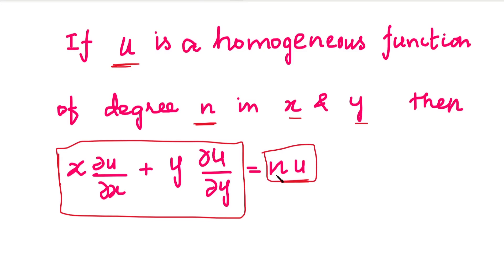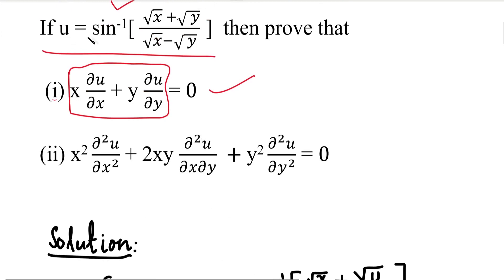We need to find the value of n, the degree. If we apply Euler's theorem, we first check whether the function is homogeneous. The function is u equals sin inverse of this expression. Since there is a sin inverse, we put the sin inverse on the left-hand side to simplify.